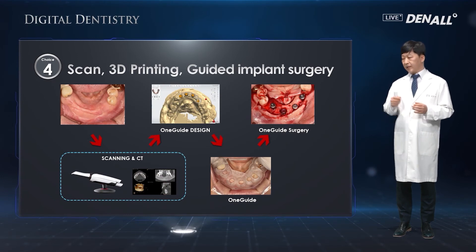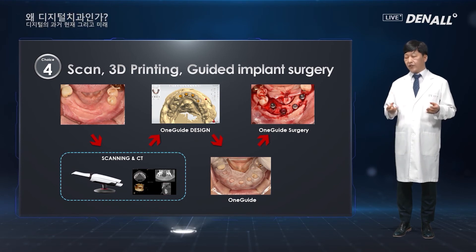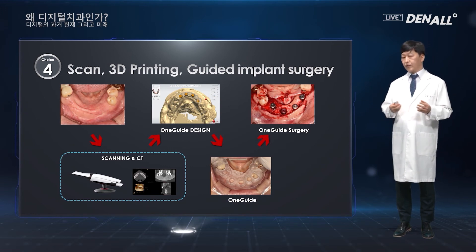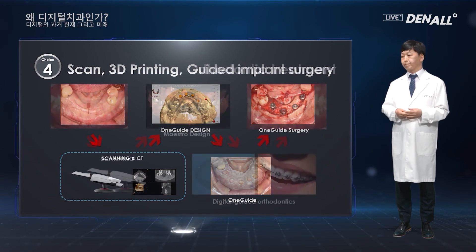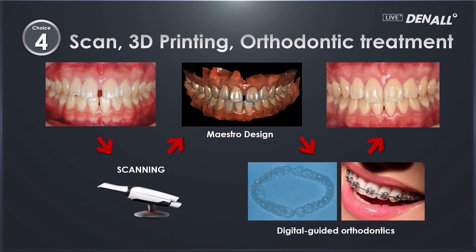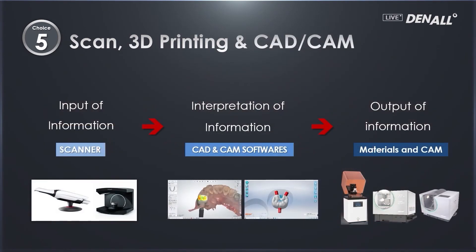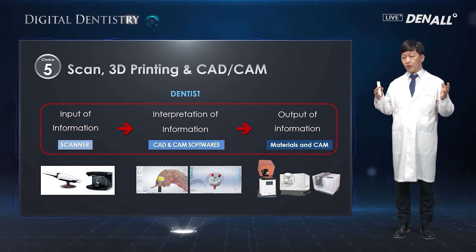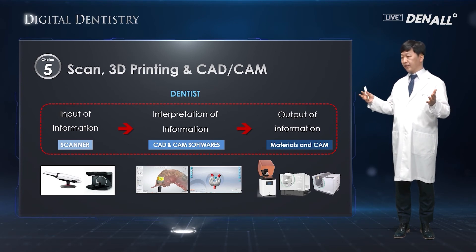When placing implants, you can use a scanner and 3D printer to design the guide and do surgery very accurately. If you send the scanner data to a guide center, you can get a very accurate stent guide. For orthodontic treatment, you can get clear aligners by scanning and sending data over. The fifth option is to use scanner and 3D printer with CAD/CAM software to provide all sorts of prosthesis in the dental clinic. It could become a lot of work, but this is the setting where you can get the most ideal results.